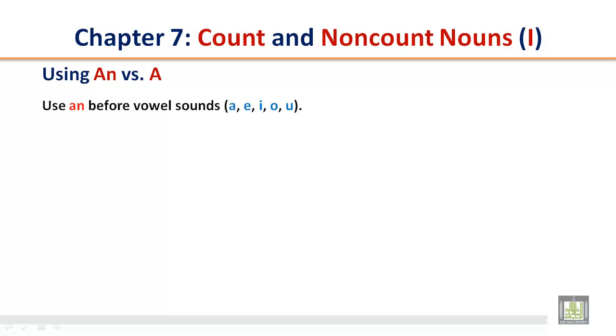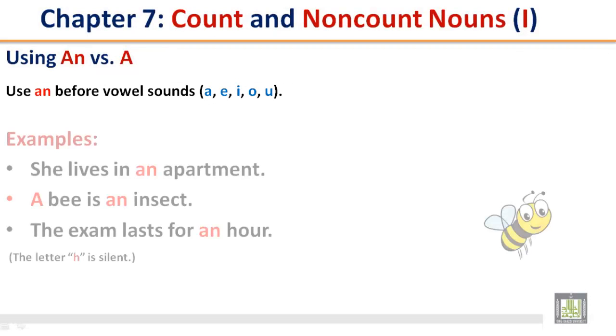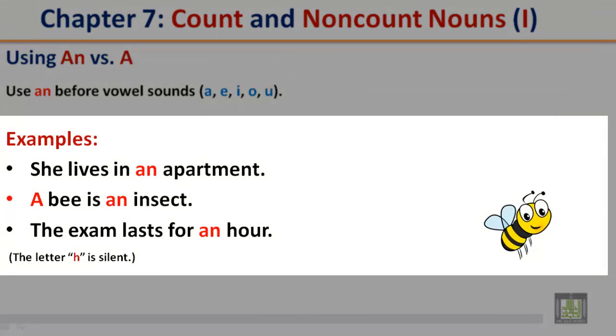Using an versus a. Use an before vowel sounds: a, e, i, o, u, which are the vowels. And remember, anything else is a consonant. Examples: She lives in an apartment. A bee is an insect. The exam lasts for an hour.